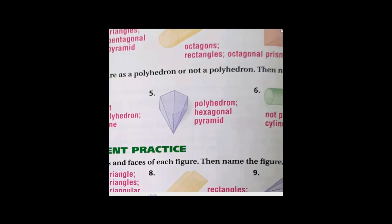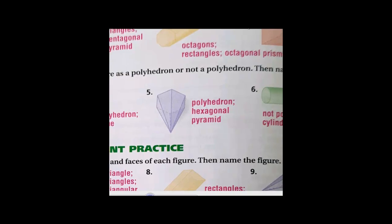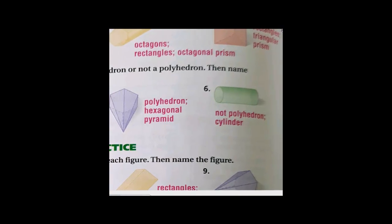Question number six — we have two bases and each base is a circle. Since it's a circle and curved, this one is not a polyhedron.